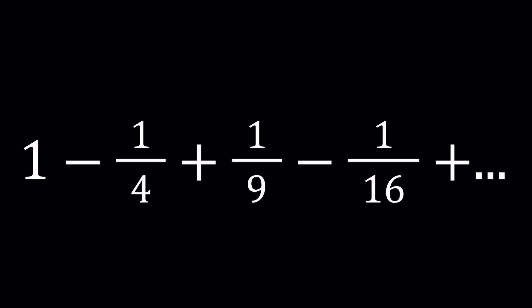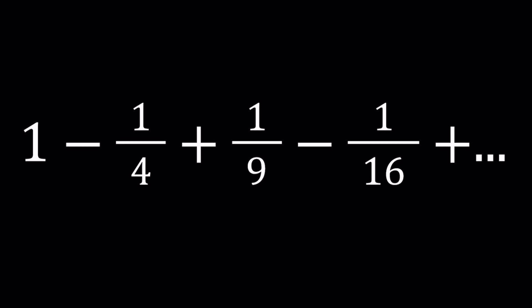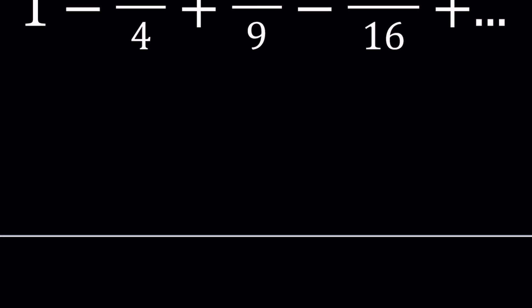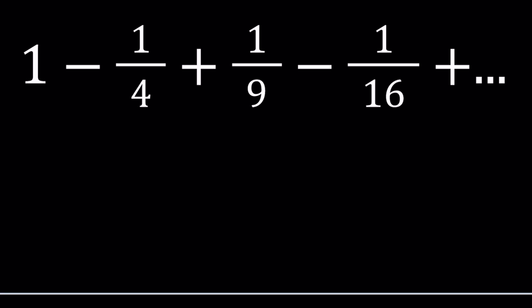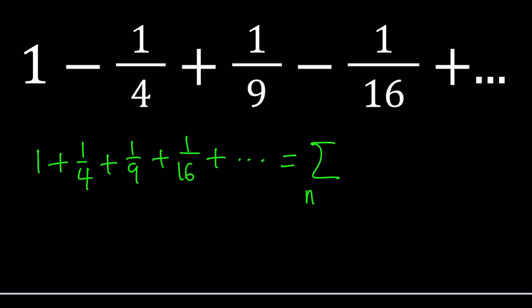How do you handle a sum like this? You need to be familiar with a formula called Basel's Problem. If you have the sum 1 plus 1/4 plus 1/9 plus 1/16 — that is, the sum of the reciprocals of perfect squares — this can be written as the sum from n=1 to infinity of 1/n². This equals π²/6, thanks to Euler.